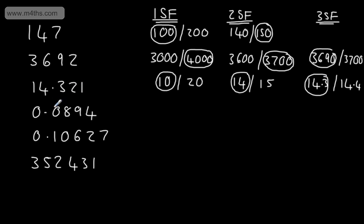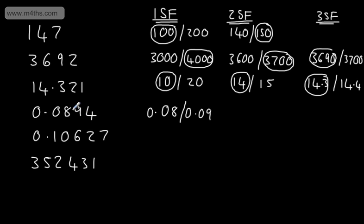Let's look at 0.0894 to one significant figure. My first choice is going to be 0.08. My second choice will be 0.09. We are rounding to the nearest hundredth. We can see the number afterwards is greater than five, so to one significant figure it will be 0.09.